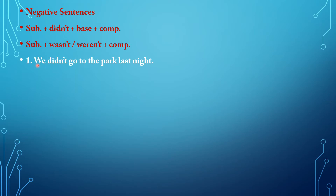For example: we didn't go to the park last night. We is the subject; didn't is the auxiliary; go is the base verb; to the park last night is the complement of the sentence.